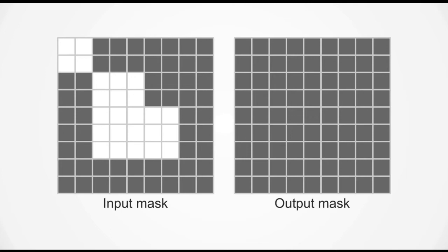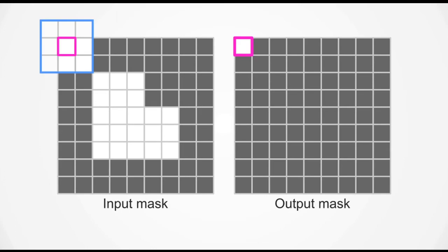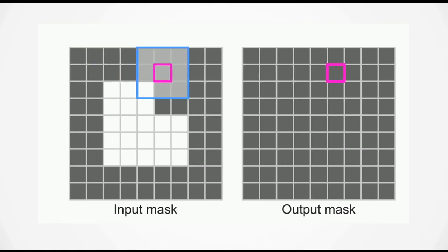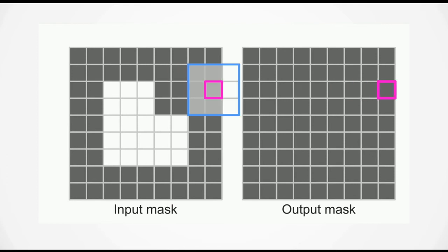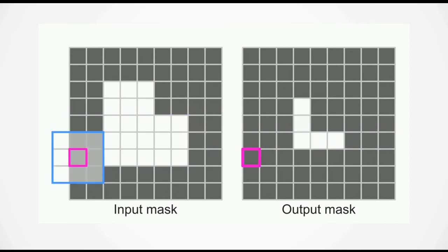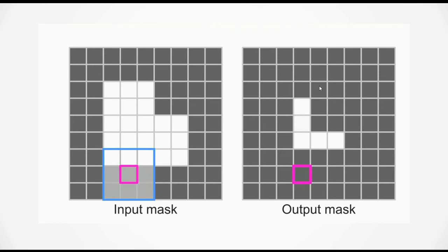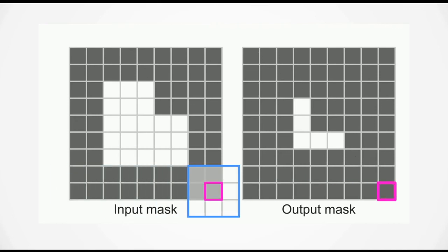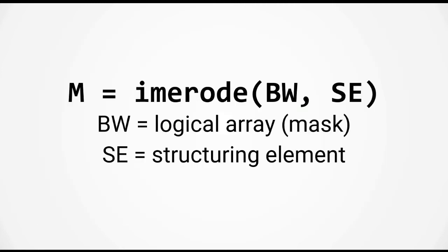If we had a different input mask where the pixels on the top left corner were true, then if we were to perform morphological erosion this output pixel would be true. I've shown you how morphological erosion works for just a few pixels, but to get the actual output of the whole operation you would carry out the erosion over every pixel of the input mask — and this animation shows how that process works. You can see that we end up with an output mask that looks smaller but has the same shape as the input mask, illustrating the effect of morphological erosion: we are removing pixels and reducing the size of the input mask.